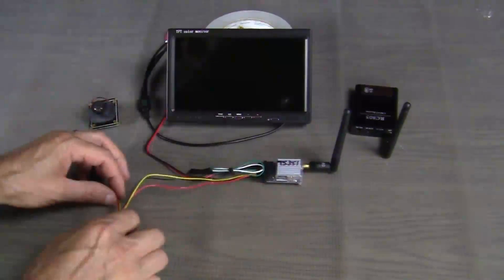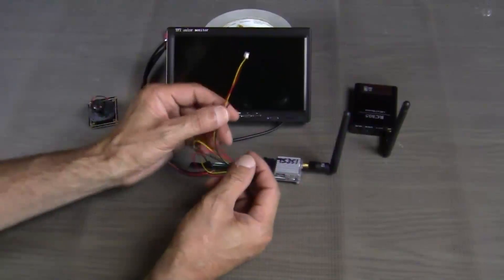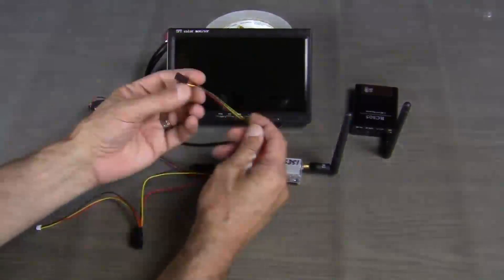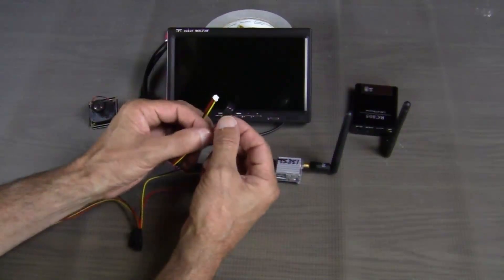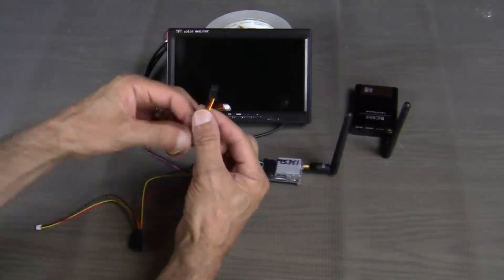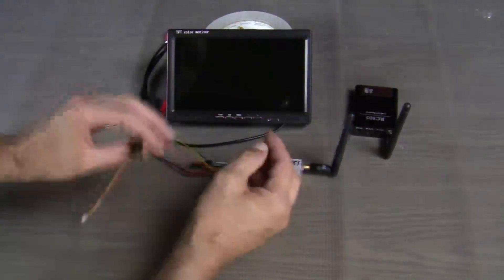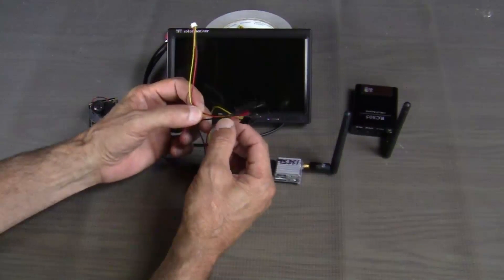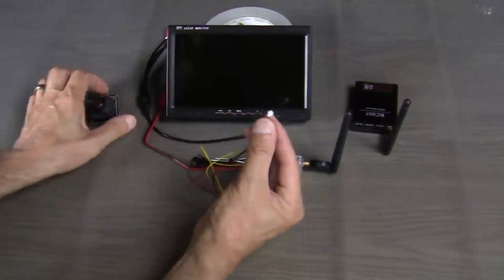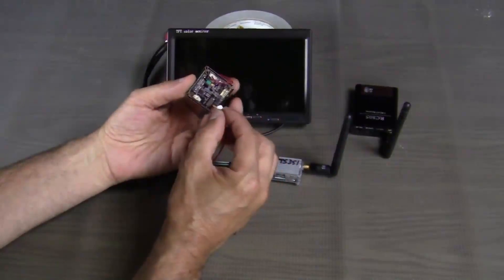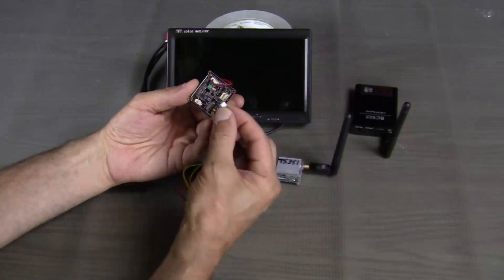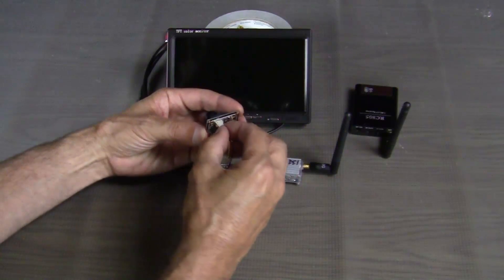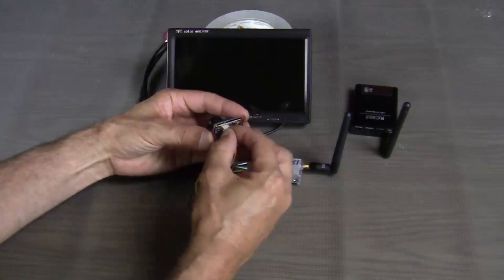So you can see that I've taken the wire that comes with the camera, which looks like this, and I've cut off this little connector and spliced it directly to the wires on the transmitter. Yellow being yellow, black being black, and red being red. Then this little connector goes into this socket here, the bottom of the camera, and just plugs in like that until you hear a little snap.